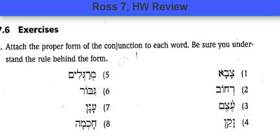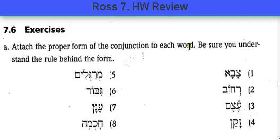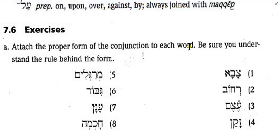Okay, so chapter 7, section 6 — we have the homework here. What you're asked to do is attach the proper form of the conjunction to each of these words. You have to know that the most common basic way to do this is to add the conjunction. What letter is it? What's the consonant that forms the conjunction? It's a vav, and what will usually go under it? Vocal sheva. That's standard, so you should always do that unless something makes it go away.